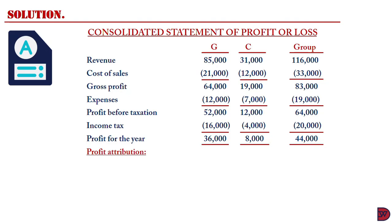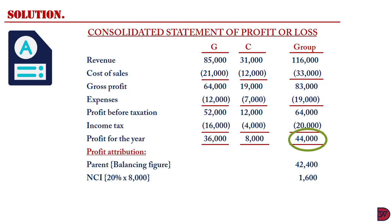When attributing the profit of the subsidiary, the non-controlling interest will be $1,600, which is their 20% holding multiplied by the profit for the year of Cero, the subsidiary, at $8,000. The group profit of $44,000 less the non-controlling interest gives a group profit attributable to the parent of $42,400 for the year.